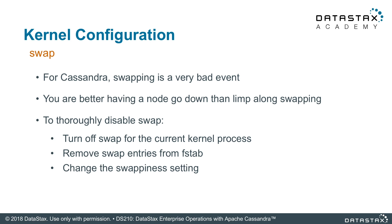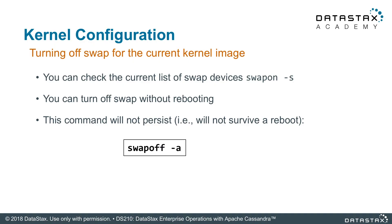it might make sense to allow swapping as a way to increase the size of virtual memory. However, for Apache Cassandra, swapping will have a devastating impact. You are actually better off letting your node die and restart rather than limp along swapping memory.